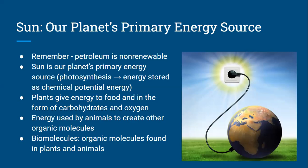Let's remember that petroleum is non-renewable and that our primary source of energy is from the sun. This is through photosynthesis, as we discussed in a previous lesson. The energy from the sun is stored as chemical potential energy in plants. Those plants then give energy in the form of carbohydrates and oxygen — they feed animals. That energy is used by animals to create other organic molecules.